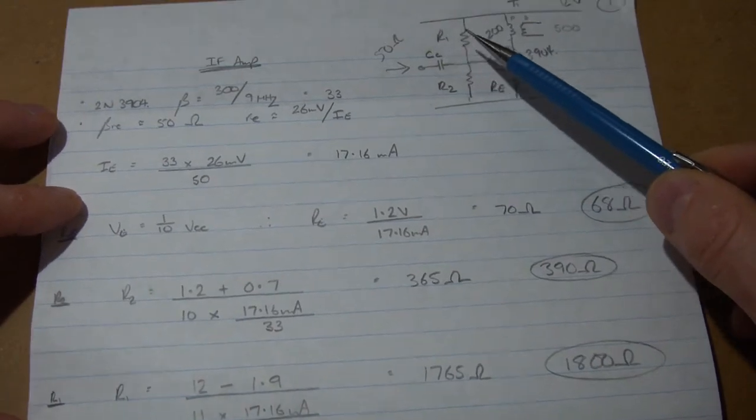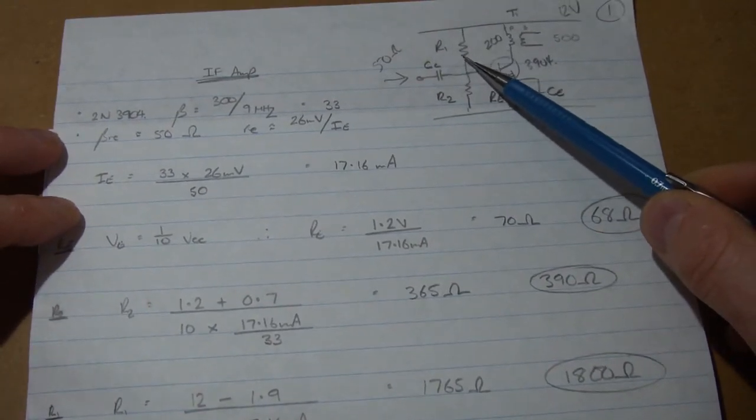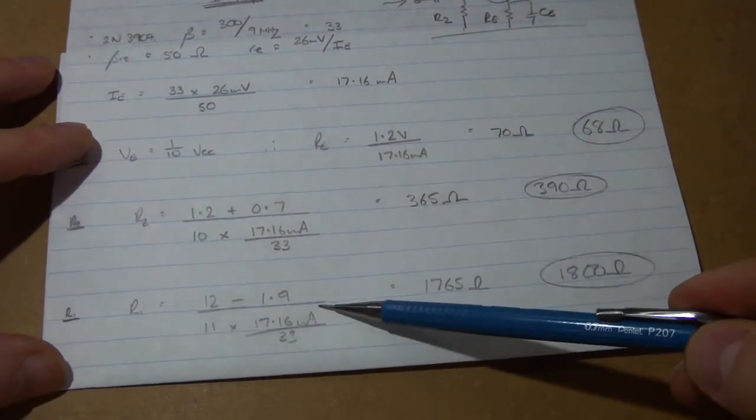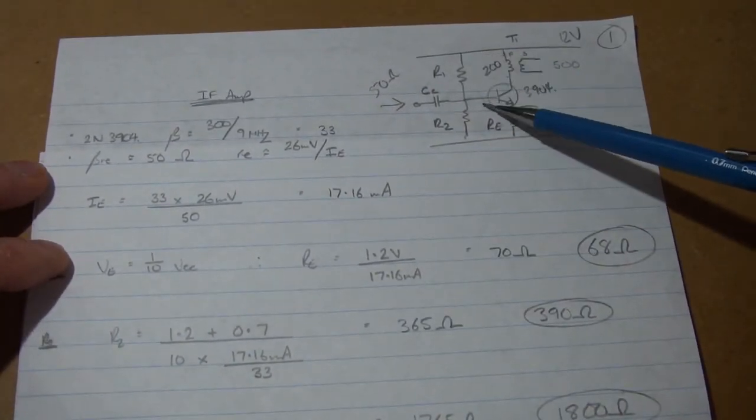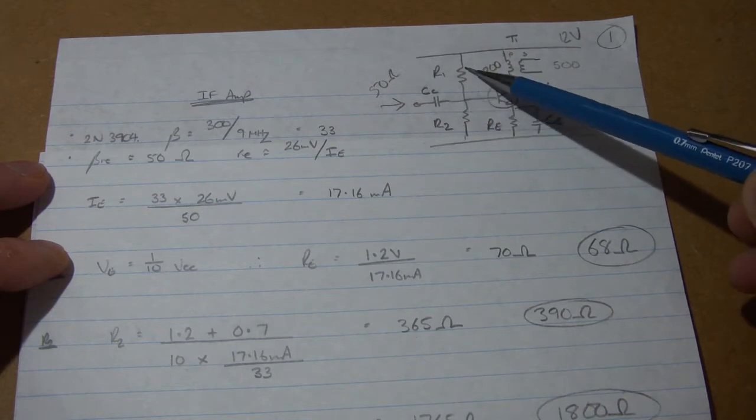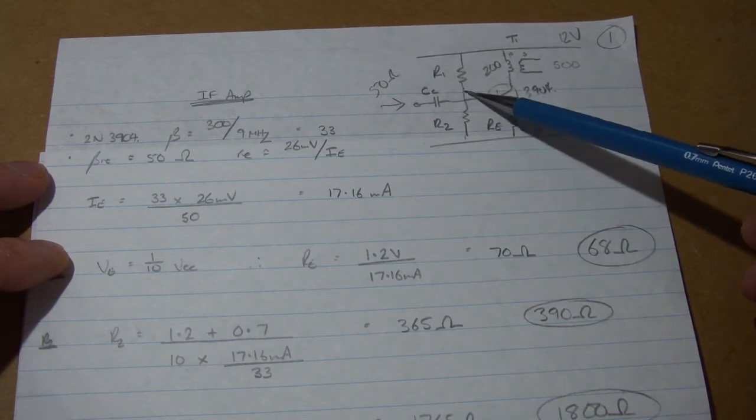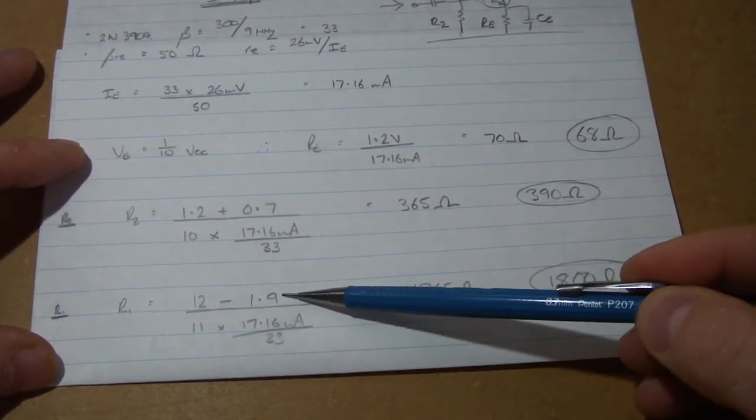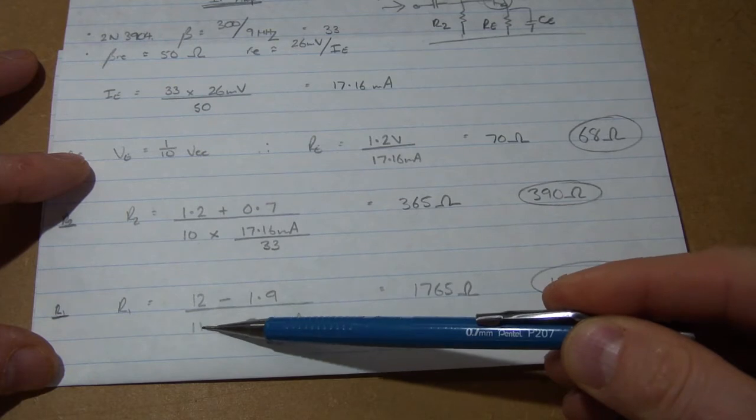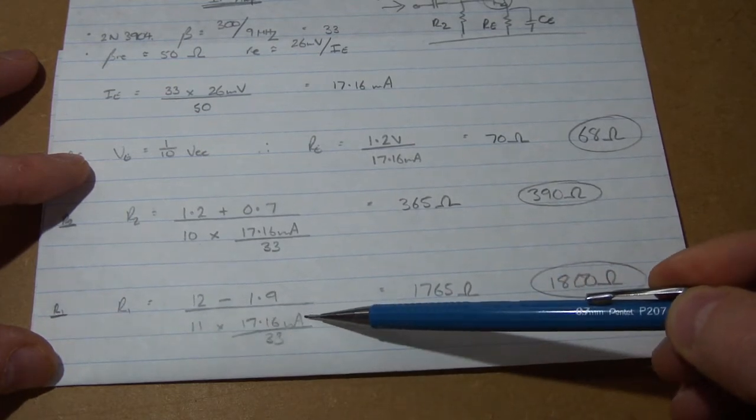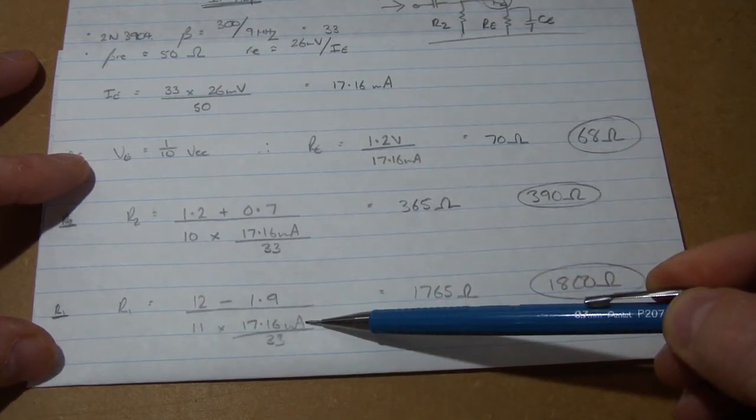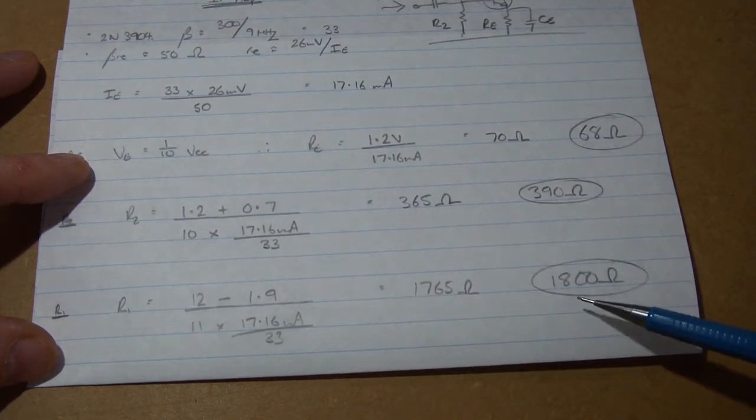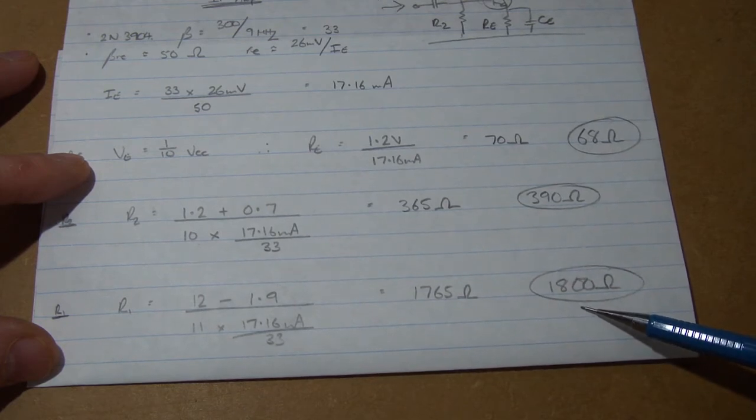For R1, if you recall, that one's got 11 times the base current flowing through that one. So we can now solve, we can say that 12 volts minus the voltage there, divided by the current through it from Ohm's law will give us that resistance. So we can say 12 volts minus 1.9 divided by 11 times the emitter current, which is approximately equal to our collector current, divided by beta, gives us 1765 ohms, and we'll use 1800 ohms.